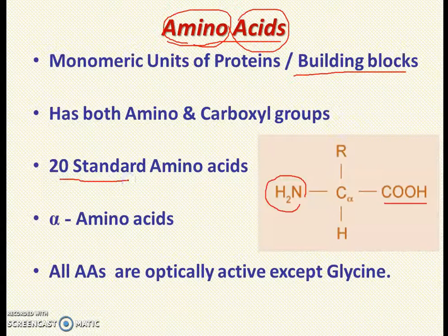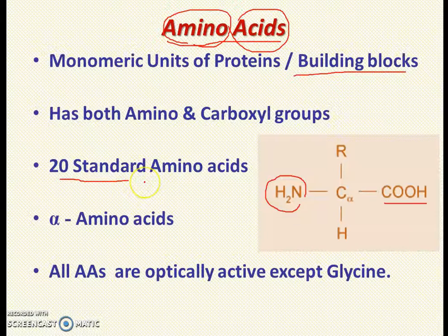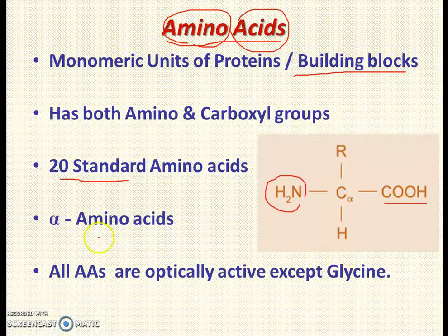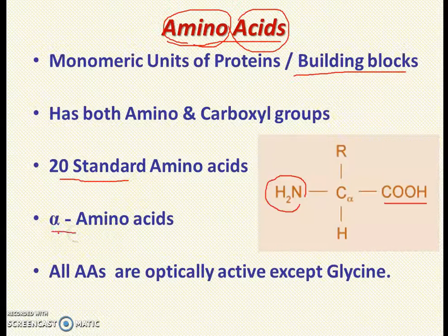There are 20 standard amino acids. Though there are thousands of amino acids available, only 20 are called standard amino acids. Why are they called standard amino acids? Because they participate in protein synthesis — that is why they are called standard amino acids. Some say that selenocysteine is also one of the standard amino acids. All the amino acids are alpha amino acids.